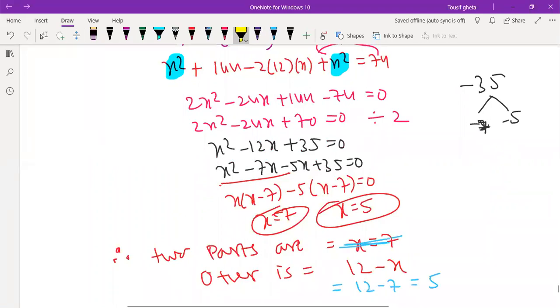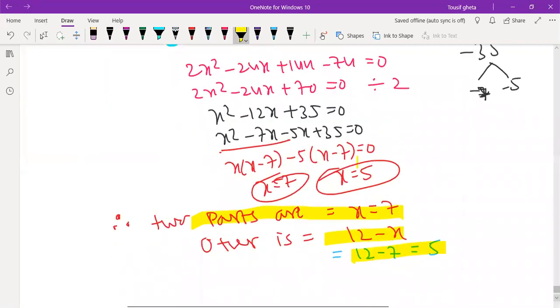So these are the two numbers boys and girls. One is 7 and other is 12 minus 7, 5. Okay. And write it out boys and girls.